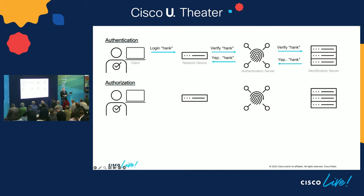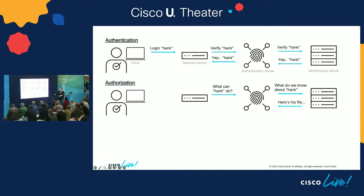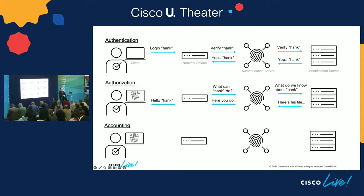Once authentication is done, the network device goes back to the authentication server and asks what the user is allowed to do — what is their role? The authentication server checks what groups and security groups the user is in, the identification server passes that information back, the authentication server finds a matching entry in the RBAC policy set, and passes back the user's permissions. That completes the first two A's. Once the user gets started, they enter the accounting phase — any action they take is sent off to the authentication server, which keeps track of it.